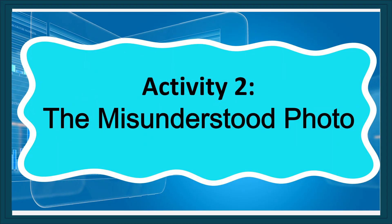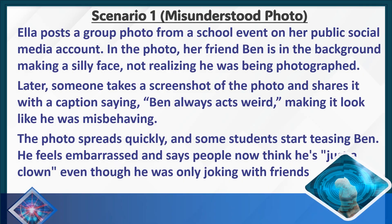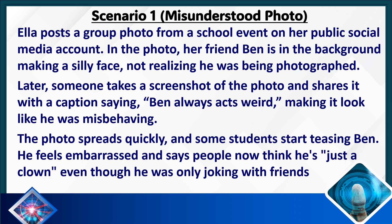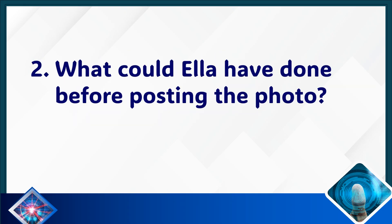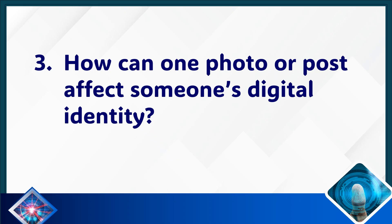Activity 2: The Misunderstood Photo. Ella posts a group photo from a school event on her public social media account. In the photo, her friend Ben is in the background making a silly face, not realizing he was being photographed. Someone takes a screenshot and shares it with the caption 'Ben always acts weird,' making it look like he was misbehaving. The photo spreads quickly and some students start teasing Ben. He feels embarrassed and says people now think he's just a clown even though he was only joking. Discussion questions: How did Ben feel when he saw the screenshot? What could Ella have done before posting the photo? How can one photo or post affect someone's digital identity?